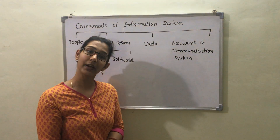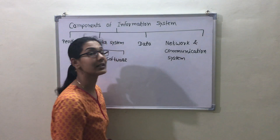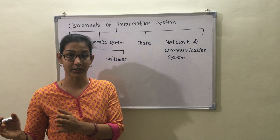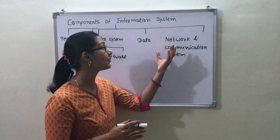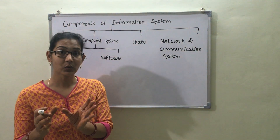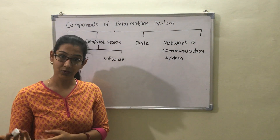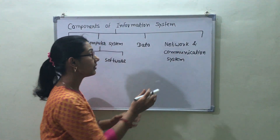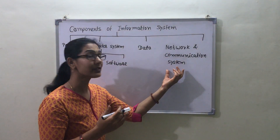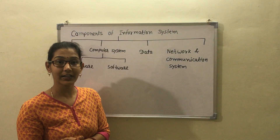The final component is the network and communication system. A network is a collection of computers interrelated to each other. Both the network and communication system include physical hardware and software, and they are linked together for transferring information from one physical location to another via networks.